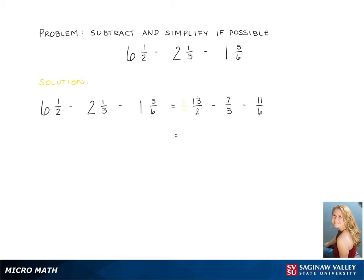Now, in order to subtract all these fractions, they need to have the same denominator. So we need to multiply 13 over 2 by 3 over 3, which gives us 39 over 6. And 7 over 3 by 2 over 2, which gives us 14 over 6. 11 over 6 can stay the same.